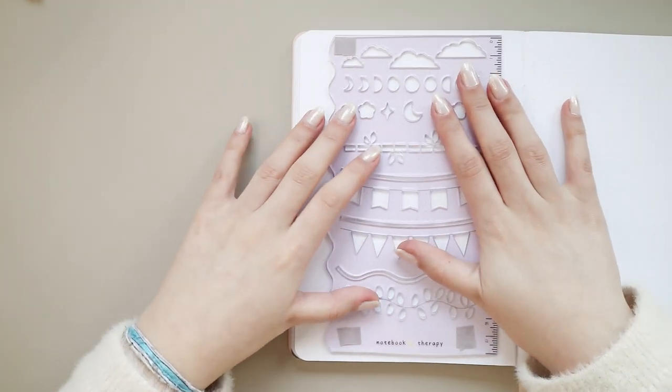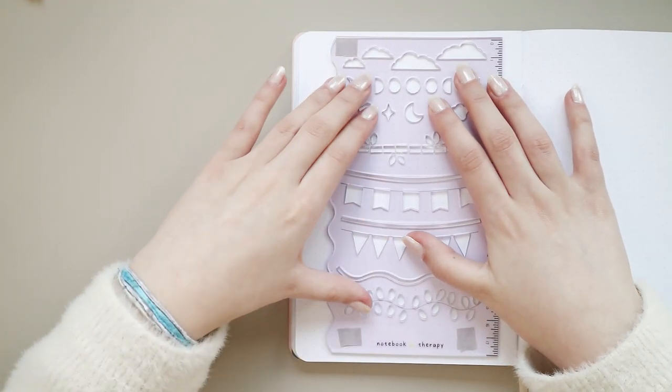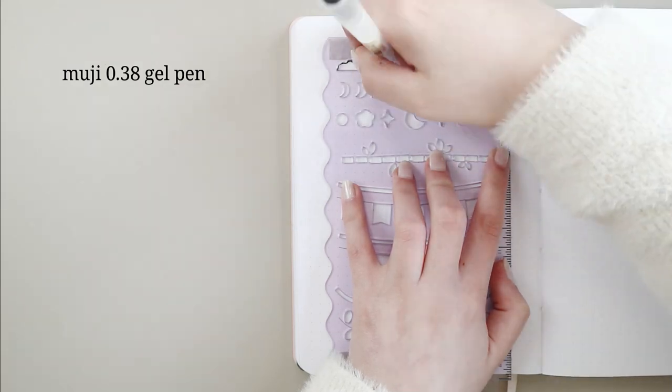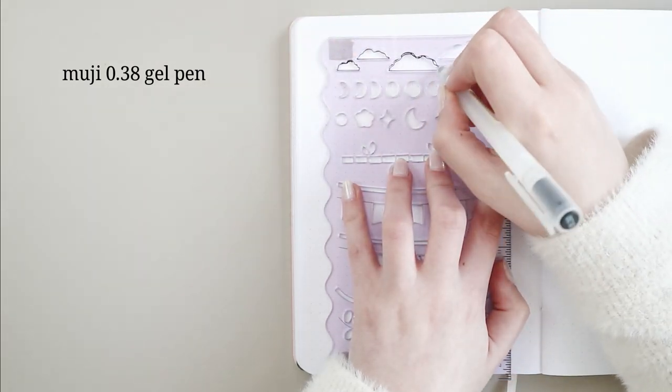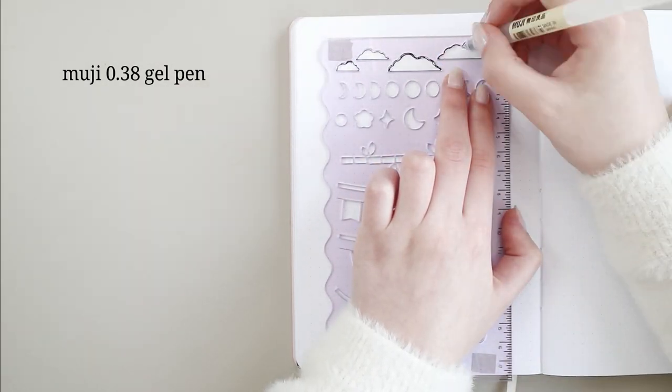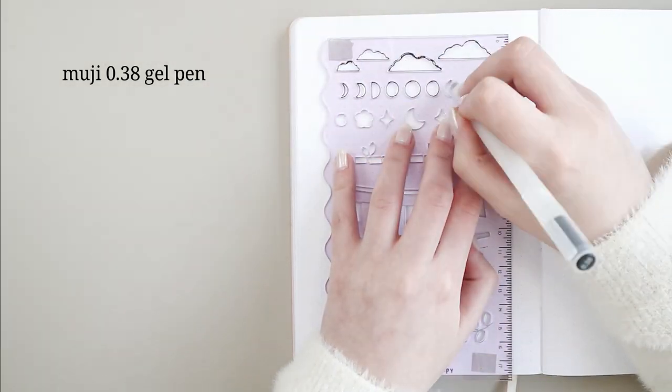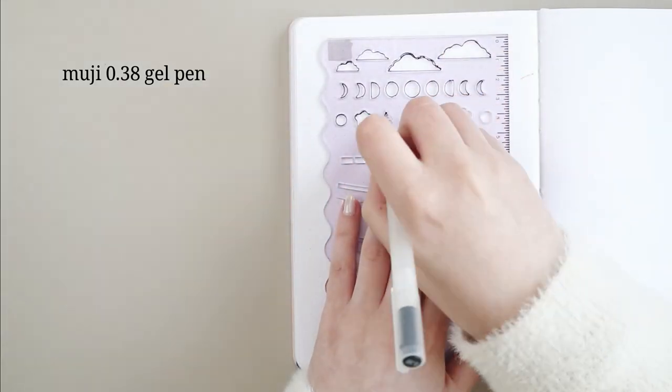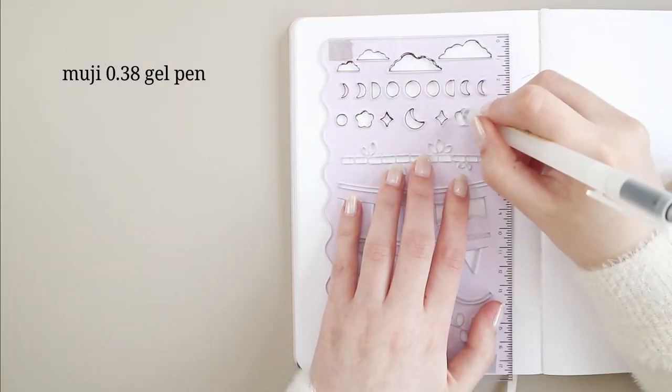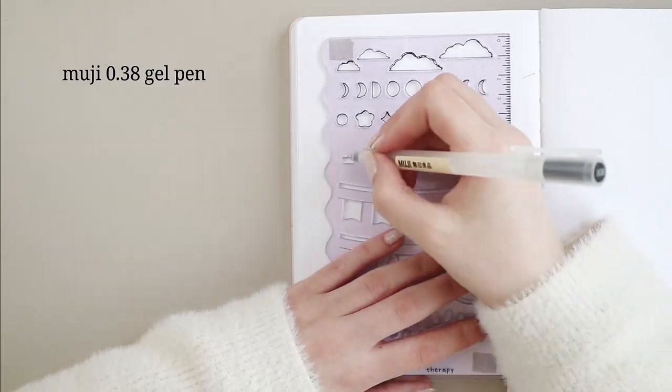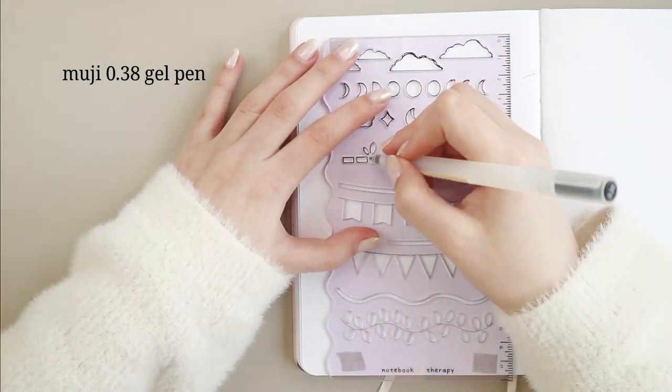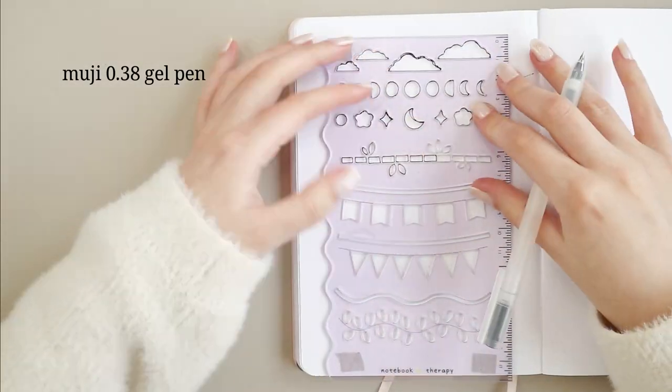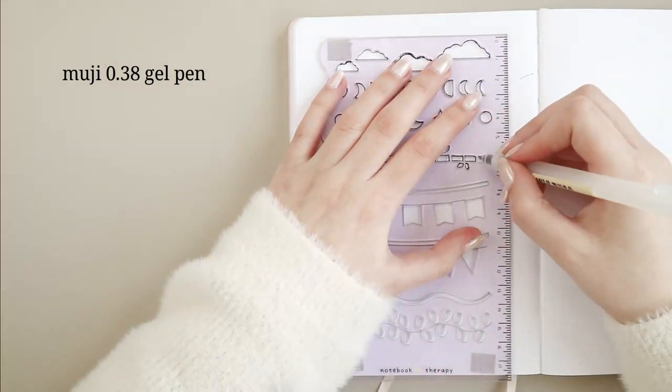I asked you on Instagram if you had any questions about the stencils and a lot of you requested for me to swatch them with different markers so that's what I will do for the swatch portion of this video. For each stencil I tried two different pens. Some pens work great on stencils whereas others not so much, but since I haven't used stencils in my bullet journal yet I will try them with the pens that I normally use for my spreads.